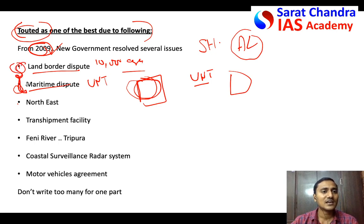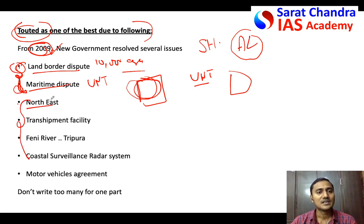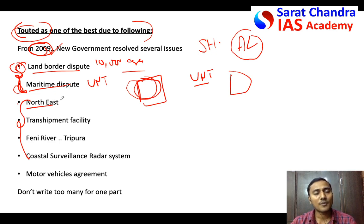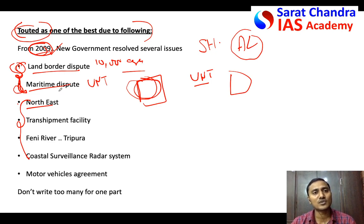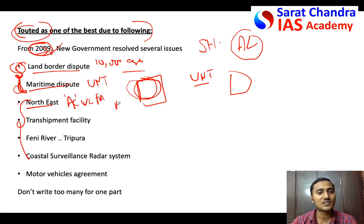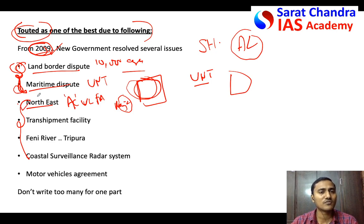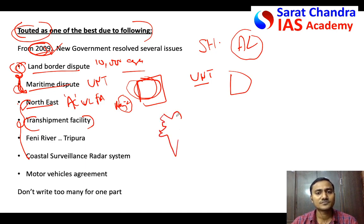Now let's see what Bangladesh has done for India. In the northeastern states, insurgency was high from independence, and several insurgent leaders had training camps in Bangladesh. After 2009, most of those training camps were closed by the Bangladesh government, and Bangladesh handed over insurgents to India — most well-known are Anup Chetia of ULFA and Ranjan Daimary, head of one of the borderline fronts. So India got a great benefit from Bangladesh in that aspect.